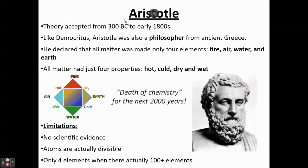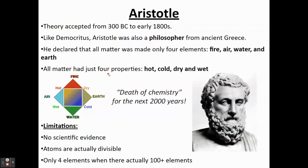Another early idea is from Aristotle. This was accepted from about 300 BC to the 1800s — we call this the death of chemistry, as there were no new notable ideas on record for chemistry at the time. Aristotle was also a philosopher, and his idea was not based on scientific evidence. The idea was that matter is made up of only four elements: fire, air, water, and earth, and all matter has just four properties: hot, cold, wet, and dry.